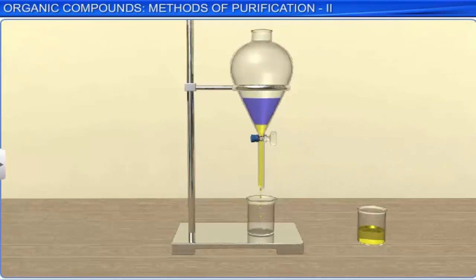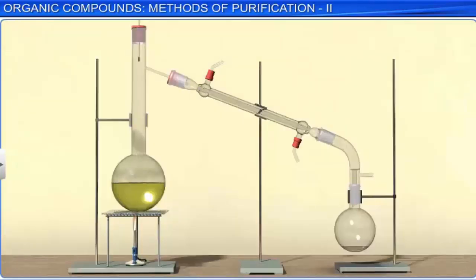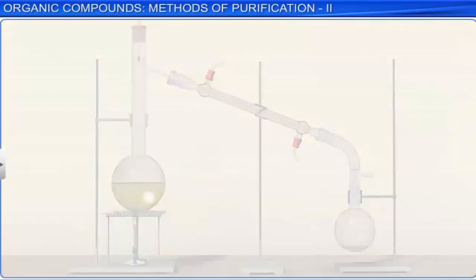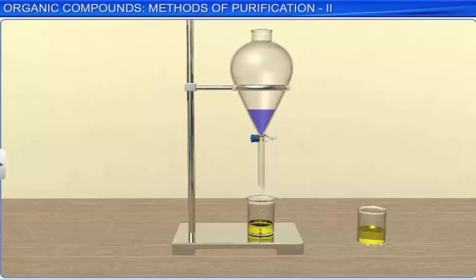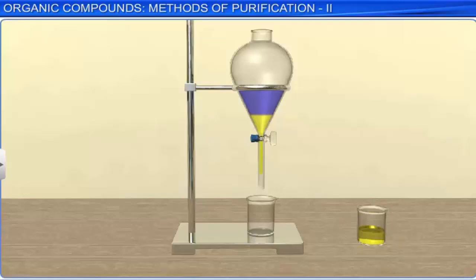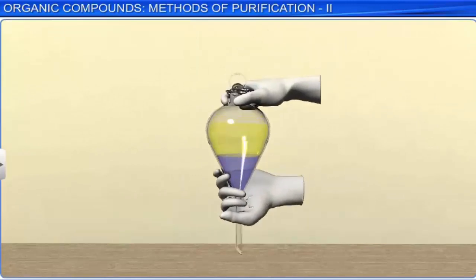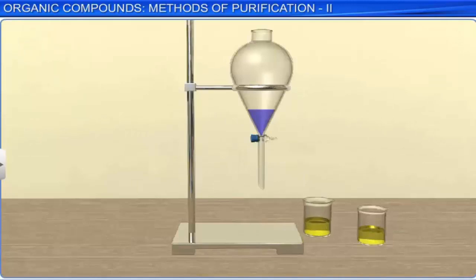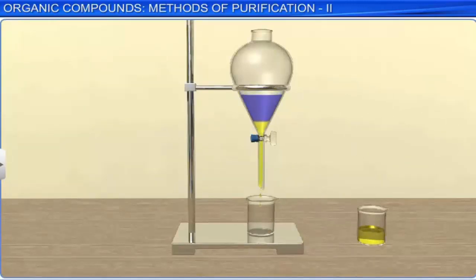The organic substance is recovered from the solvent layer by distillation. If the organic compound is less soluble in the organic solvent, a technique of continuous extraction is used, in which a small quantity of the same solvent is repeatedly used for extraction. The solvent layer is collected each time and distilled finally to get the compound.